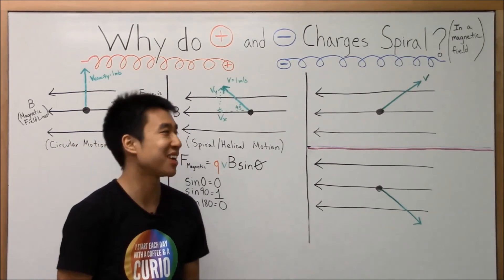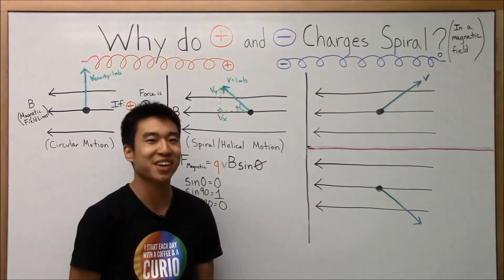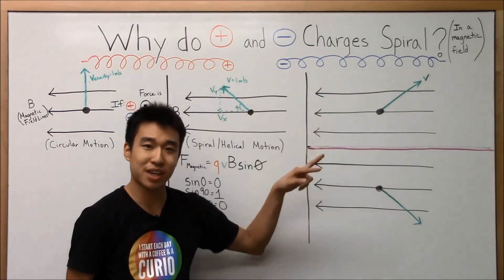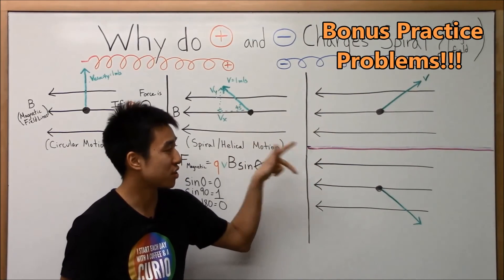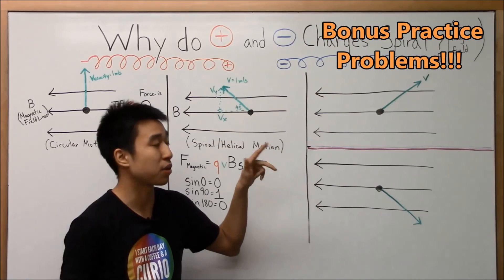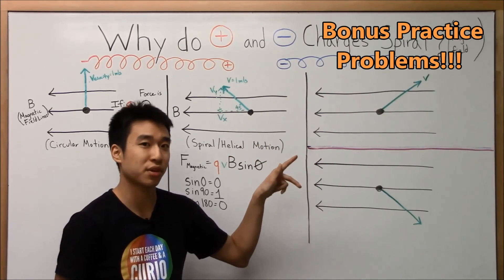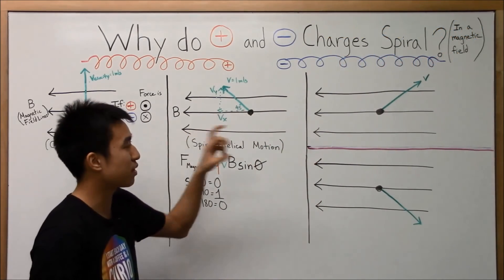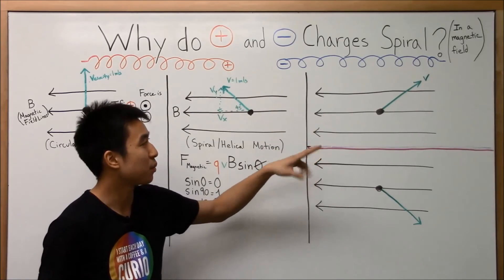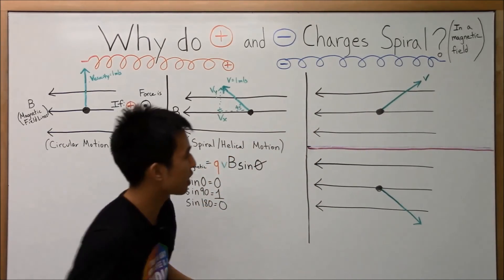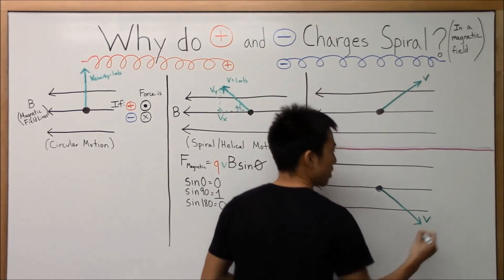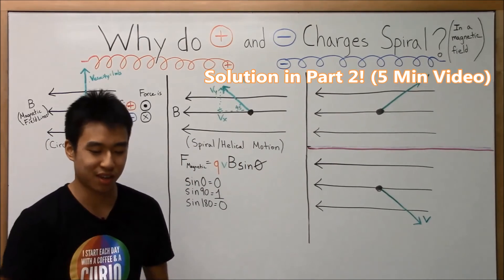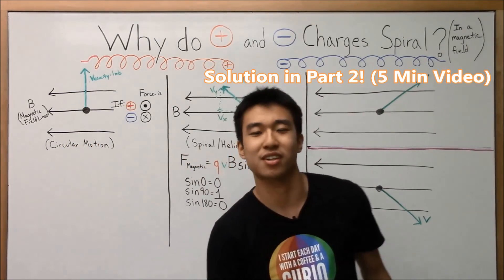All right. Hope that made sense. A lot of terms there, I know. Think about these two cases now. What direction are the charges going to spiral if they were positive and if they were negative? Okay? And also, what force do they feel at this point in time when their velocities are pointed in those directions? All right. Try that out, hit pause, and we'll check your answers. Okay? See you in a second.